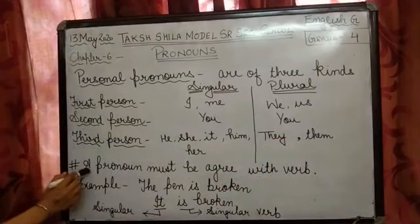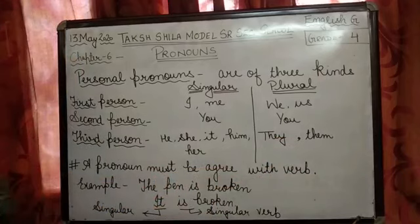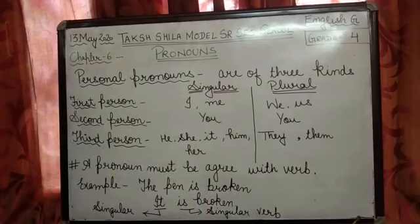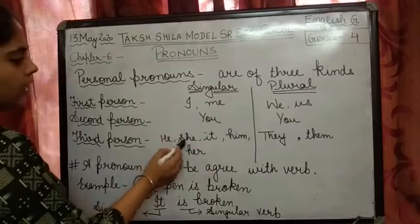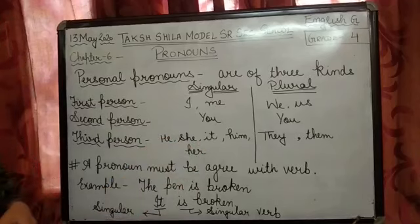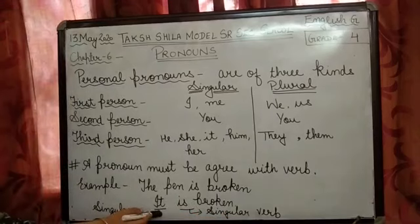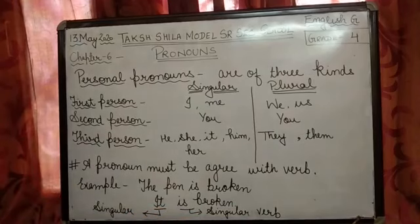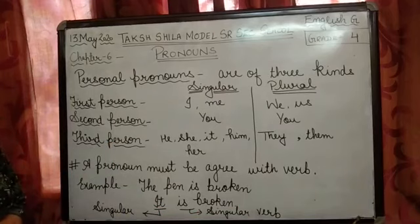An important rule is that a pronoun must agree with its verb. For example: 'The pen is broken.' Here, pen is a noun. Since pen is a name of a thing, we use the pronoun 'it'. He is used for masculine, she is used for feminine, and it is used for things or animals. So we say: 'It is broken.' Since 'it' is singular, we use the singular verb 'is'. This means if we are using a singular subject, we must use a singular verb.